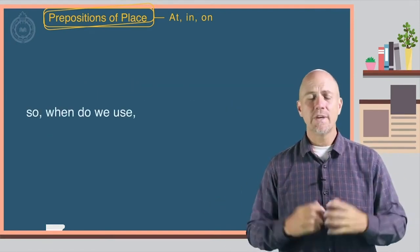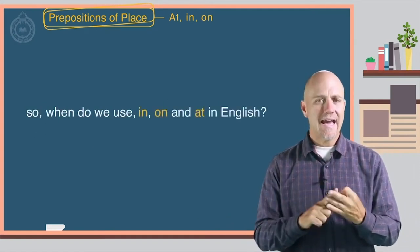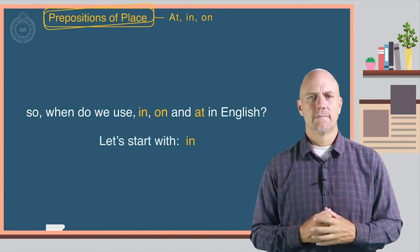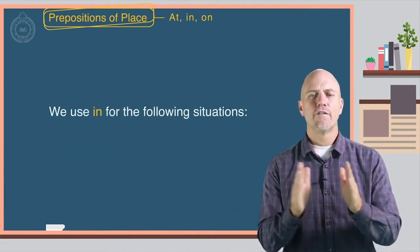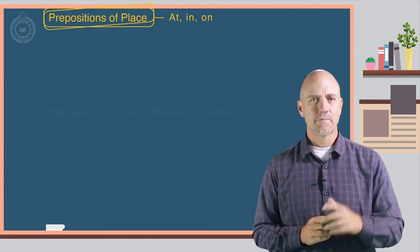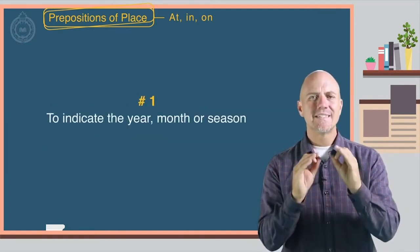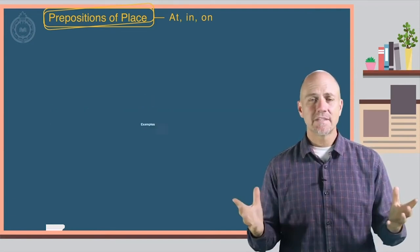So when do we use in, on, and at in English? Let's start with in. We use in for the following situations. Number one: to indicate the year, month, or season. Here are some examples.